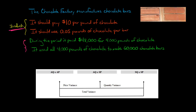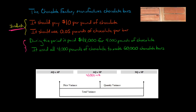Let's start going into the numbers. For actual quantity times standard price: the actual quantity was 4,000 pounds, and the standard price was $10 per pound. Multiplying that out gives us $40,000.